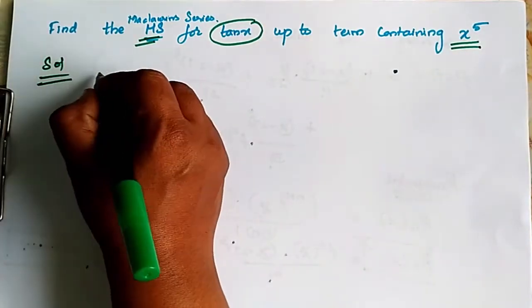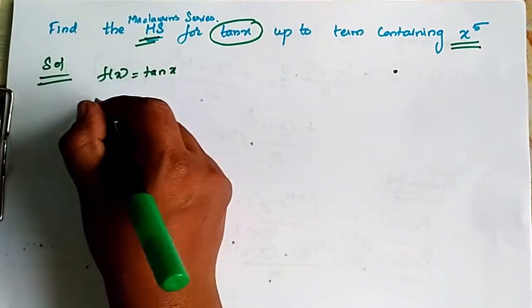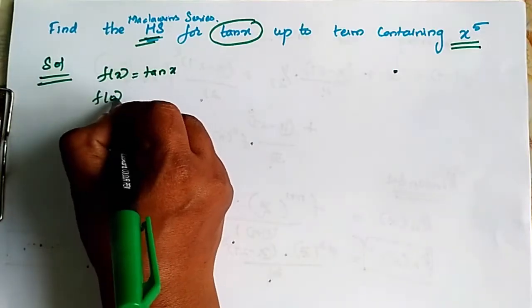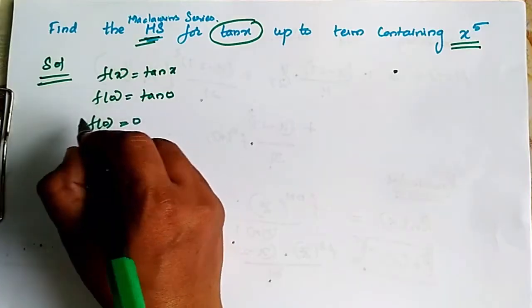So if we can find f of x is equal to tan x, then f of 0 is equal to tan 0. So f of 0 is equal to 0.